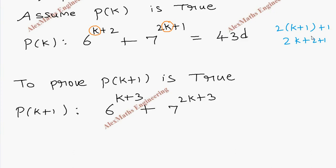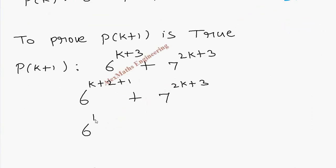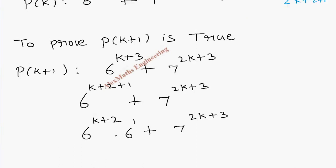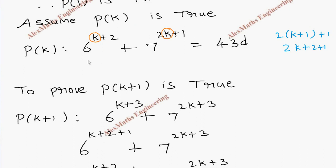We are going to prove this expression is divisible by 43. For that, we split 6^(k+3) as 6^(k+2) × 6^1, and keep 7^(2k+3) as it is. So we have 6^(k+2) × 6 + 7^(2k+3).